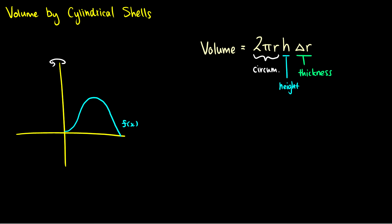We take the height at some point of our curve and make a cylindrical shell that goes all the way around. We take the volume of that infinitely thin slice and do this for every single point, and eventually we will have the total volume generated.